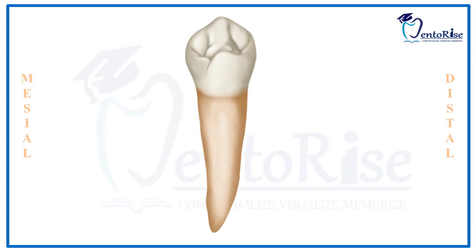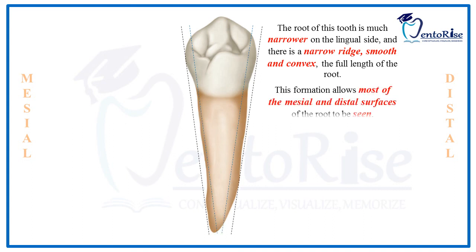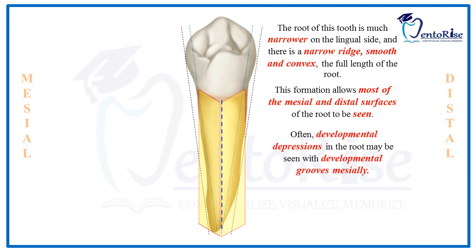Observing the root from the lingual aspect, it is much narrower on the lingual side, allowing the mesial and distal surfaces of the root to be appreciated from the lingual aspect. Because of this narrowness, a narrow, smooth and convex ridge can be observed on the root surface along its full length. Developmental depressions and developmental grooves may be present mesially. The root tapers evenly from the cervix and ends in a pointed apex.